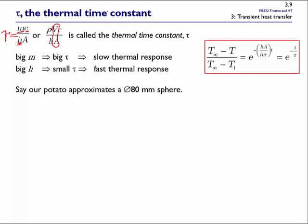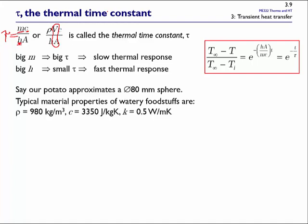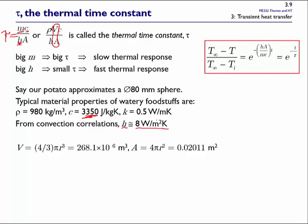Let's do a quick example with numbers, approximating our potato as a sphere. Using ballpark thermophysical properties for watery foodstuffs from a textbook — a density slightly less than water, a specific heat about three-quarters the value for water — and an estimated convection coefficient of 8 W/(m²·K). The volume is 268×10⁻⁶ m³ and the surface area is about 0.02 m². Plugging numbers into ρVC/(hA) gives a time constant of about 91 minutes.